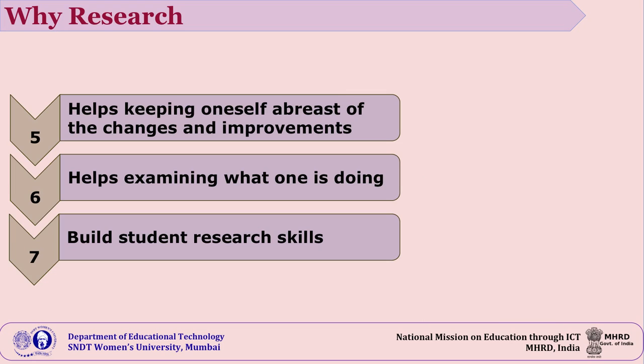As part of research, a researcher is expected to know the latest happenings in his or her field. This process indirectly helps one to keep abreast with the latest and new things happening around. In the research process, a researcher keeps viewing the parallel options that other scholars are following in the field, and this helps to see one's own efforts in the light of what others are doing and thus understand one's process in a better manner.